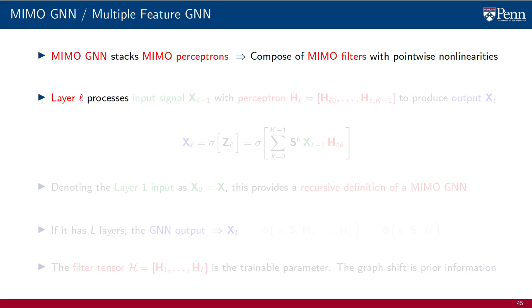Layer L of the GNN processes the output of the previous layer, XL-1. This is a matrix graph signal with multiple features. At layer L, this output plays the role of an input. The input is processed with the MIMO perceptron HL. This MIMO perceptron is the composition of a MIMO filter with a point-wise nonlinearity. The coefficients of this MIMO filter are matrices HLK. The result of this processing is the output of the layer XL. This is also a matrix graph signal with multiple features.